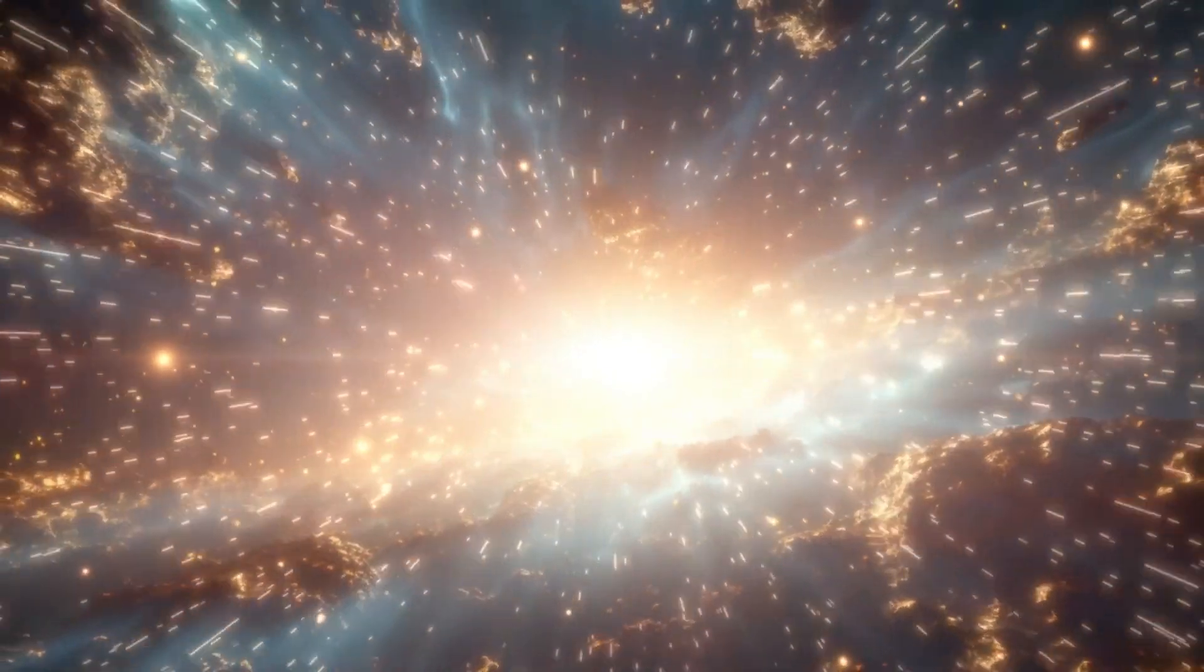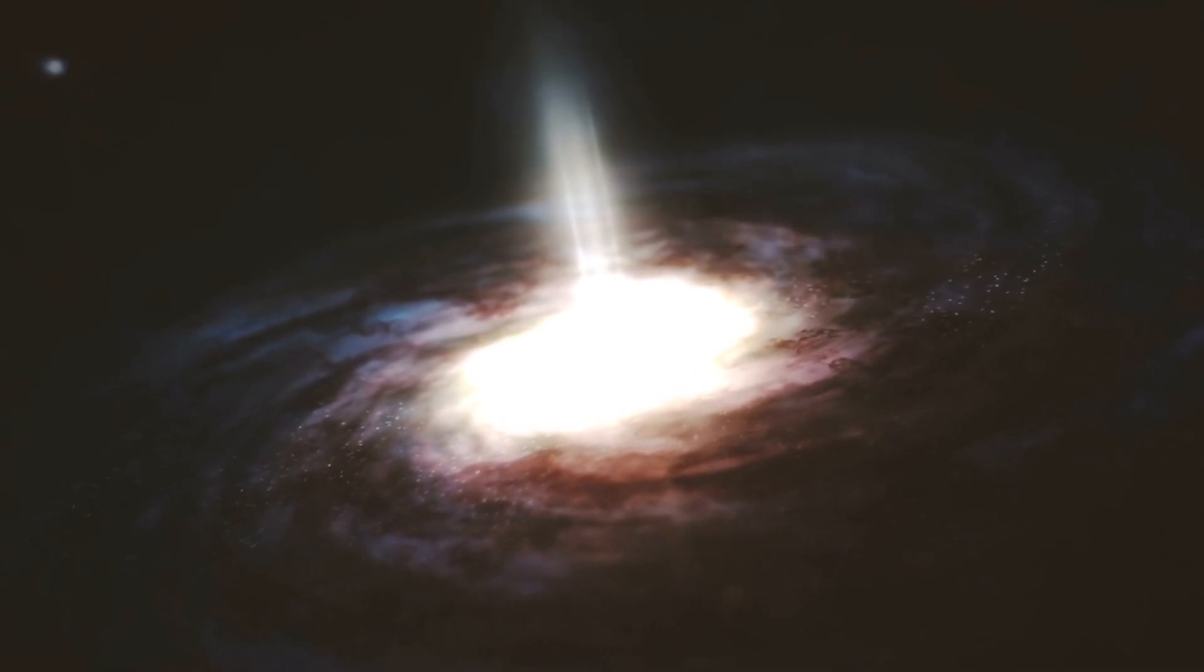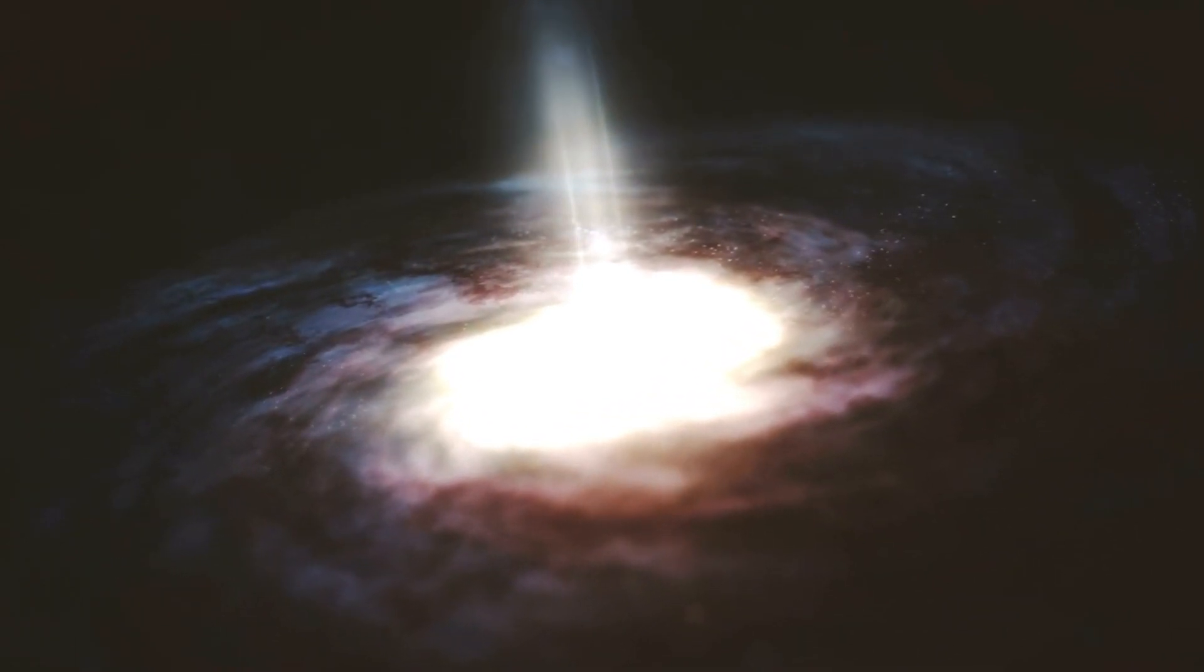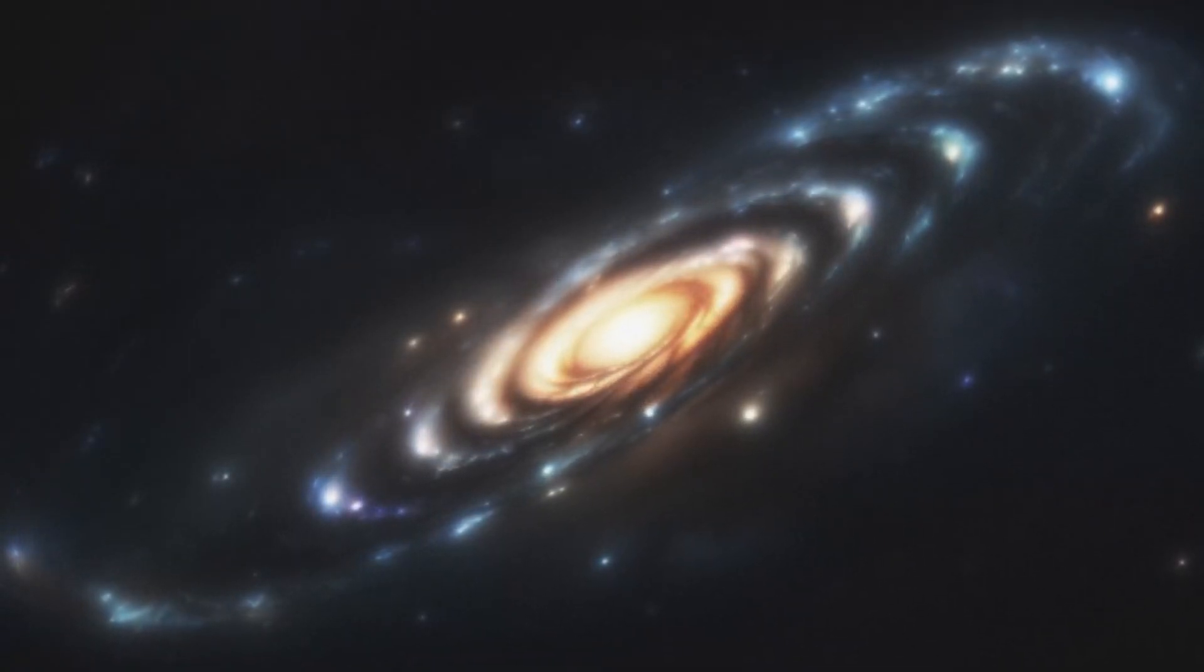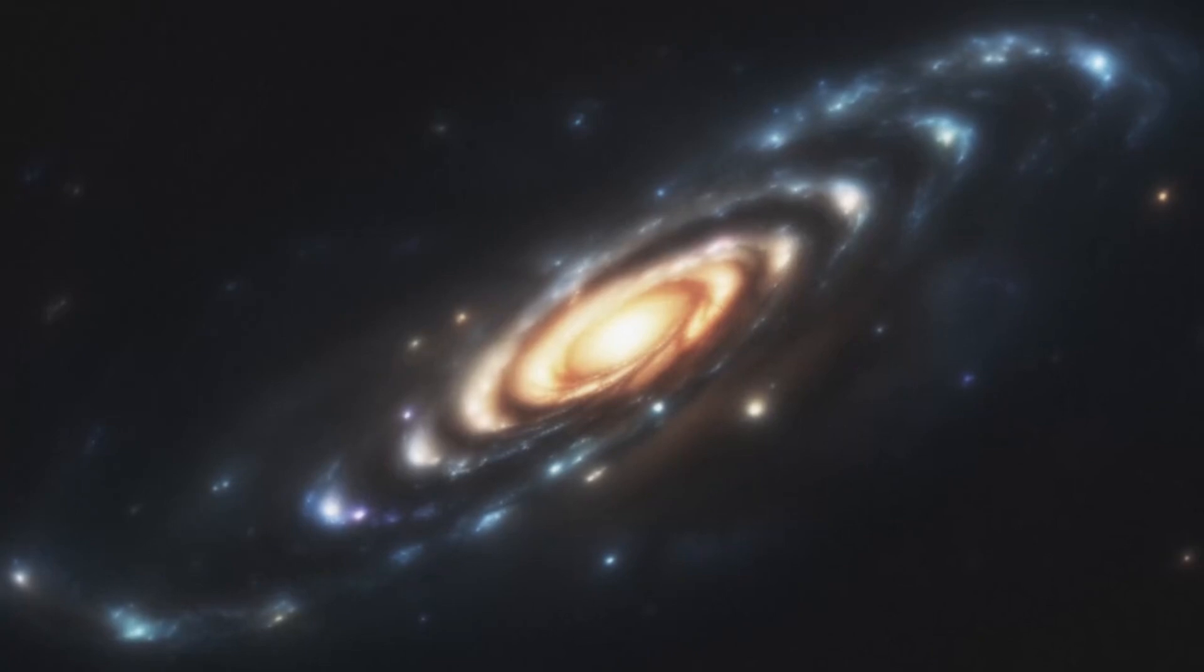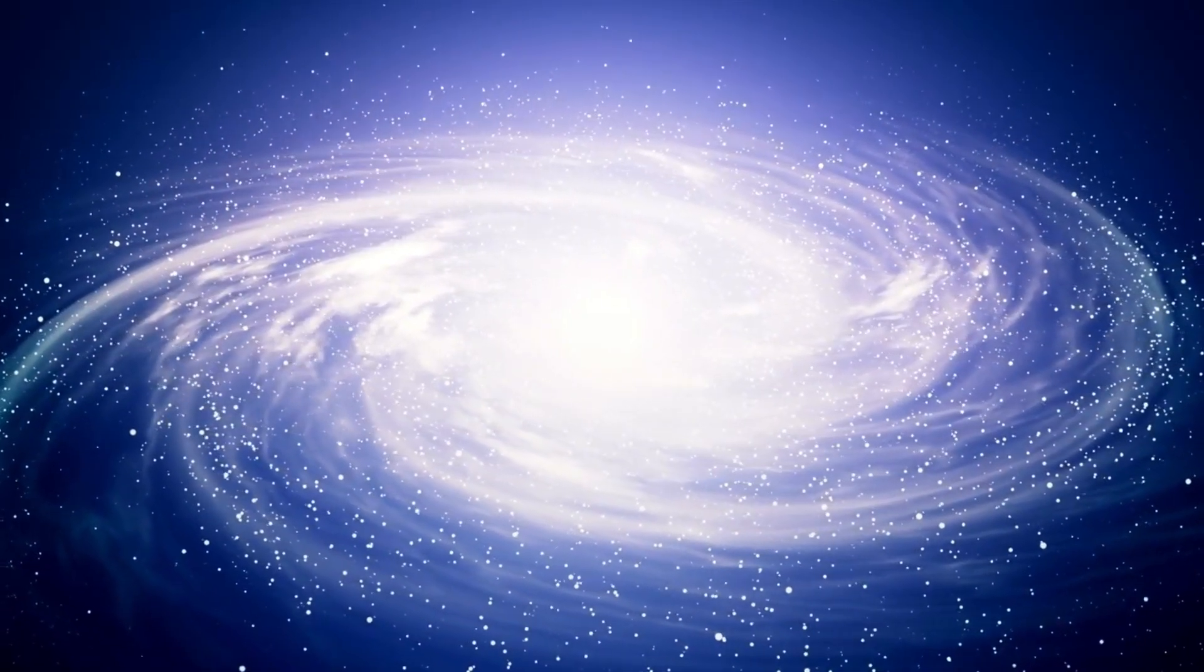Yet that's not all. There are also hot Jupiters, gas giants that orbit extremely close to their host star, existing in a scorching environment with temperatures high enough to melt metal. Imagine seeing such a planet up close with its violent storms and intense heat.